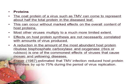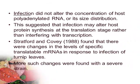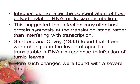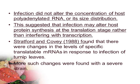Frasier (1987) established that TMV infection reduced host protein synthesis by up to 75% during the period of virus replication. Infection did not alter the concentration of host polyadenylated RNA or its size distribution. This suggests that infection may alter host protein synthesis at the translation stage rather than interfering with transcription. Stratford and Covey (1988) found that there were changes in the levels of specific translatable mRNAs in response to infection of turnip leaves with mosaic virus. More such changes were found with severe strains.